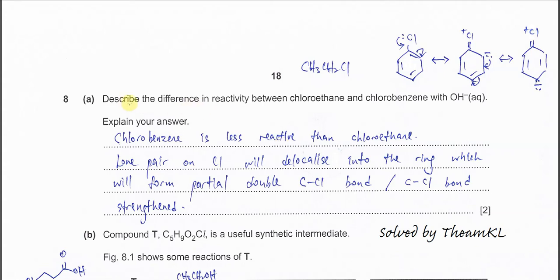Question 8. Describe the difference in reactivity between chloroethane and chlorobenzene with hydroxide. This is the hydrolysis of the two compounds. We know that in chlorobenzene, the p orbitals of the chlorine will overlap with the pi electron system in the benzene ring, and therefore the lone pair on the chlorine will delocalize into the benzene ring. During the delocalization, it can form a C-Cl double bond. Once it forms this C-Cl double bond, it has a greater bond strength, and this double bond character will make the C-Cl bond harder to break, which means it's harder to undergo hydrolysis with the hydroxide solution.